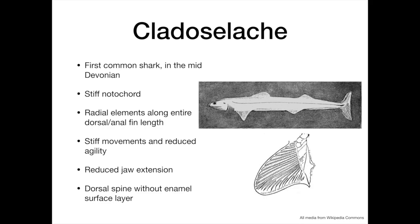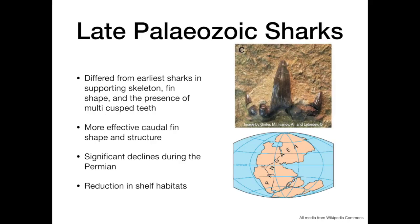Furthermore, the radial elements in its dorsal and anal fins were present across the entire fin length, which restricted the ability of the shark further. Further differences included the lack of an enamel layer on the dorsal spine, and reduced jaw extension, which limited the size of prey that Cladoselache could take on.